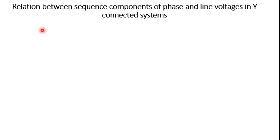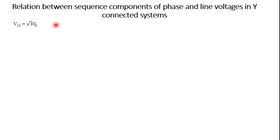Let us discuss the next concept: the relation between sequence components of phase voltages and line voltages in a star connected system. We are first discussing for star, then we will go for delta. We know that VL is equal to root 3 times V_phase — that is, line voltage equals root 3 times phase voltage.